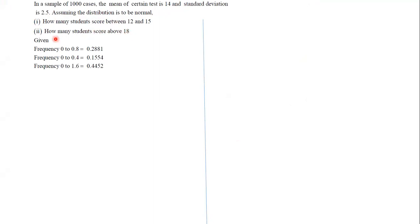How many students score above 18? And the frequency for 0 to 0.8, 0 to 0.4, and 0 to 1.6 is given. So whatever information is given, we have to convert that into the normal variant.